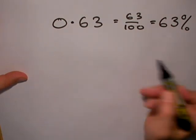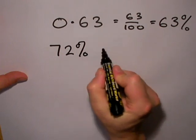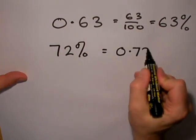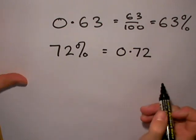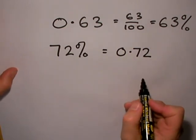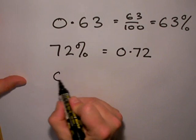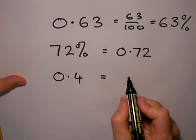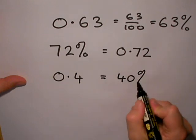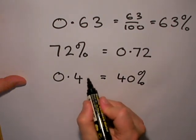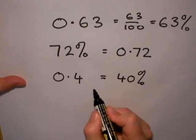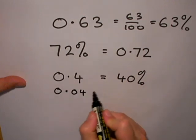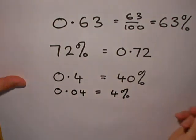72 percent is 0.72, quite easily. If we have just one digit after the decimal point, for example 0.4, that is equal to not 4% but 40%. We have to think of an extra zero just being there. If we wanted to write 4%, that would look like this: 0.04, and that would be 4%, a bit like pounds and pennies.